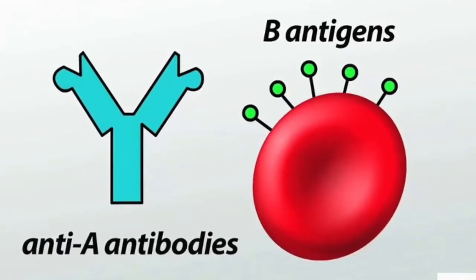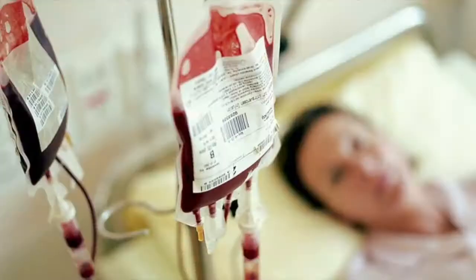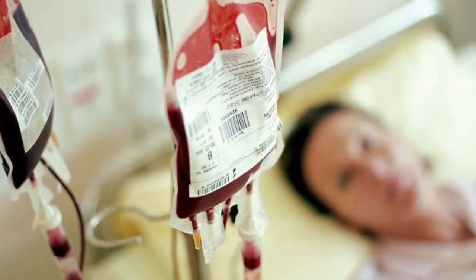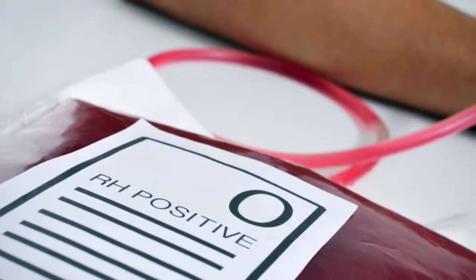The reason that these antibodies become important has to do with transfusions. When you're getting a transfusion of blood in the hospital, if you're type A, they can give you type A blood. They can also give you type O blood, because type O blood doesn't have any antigens at all.